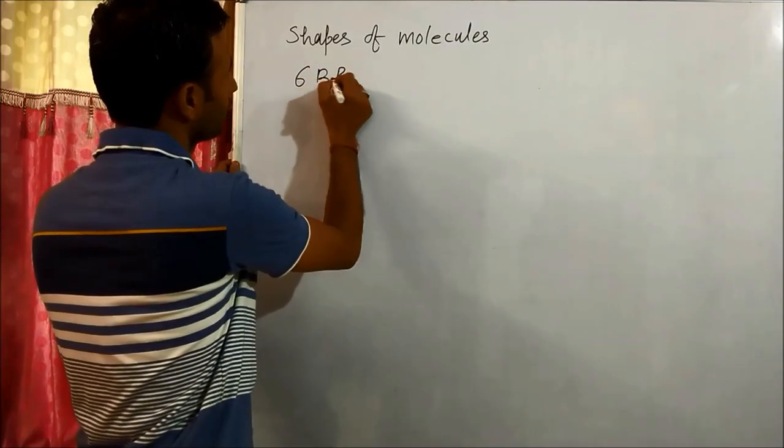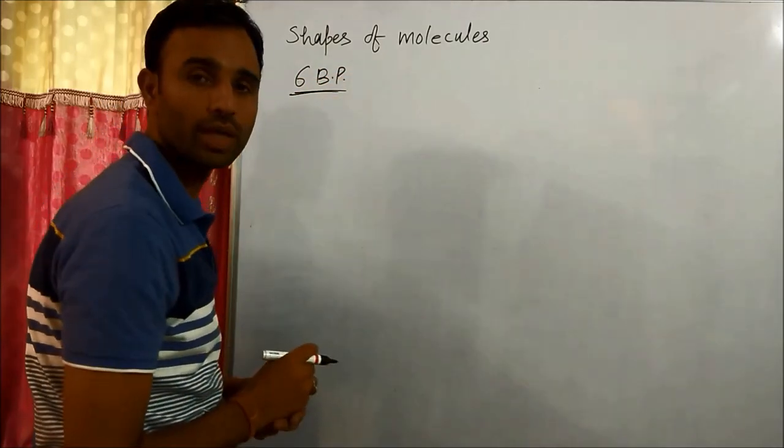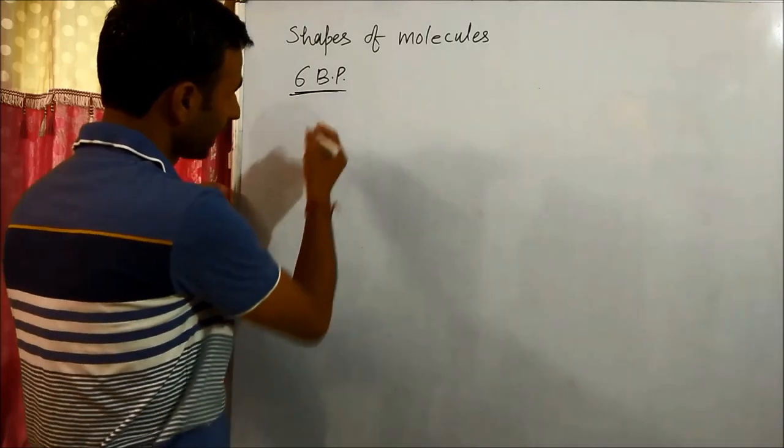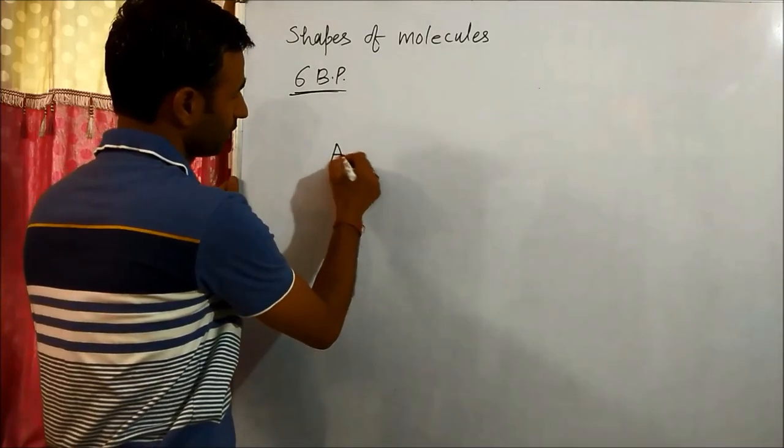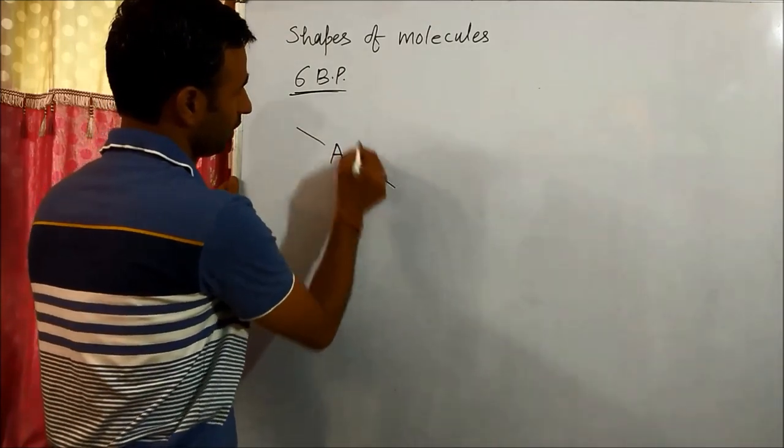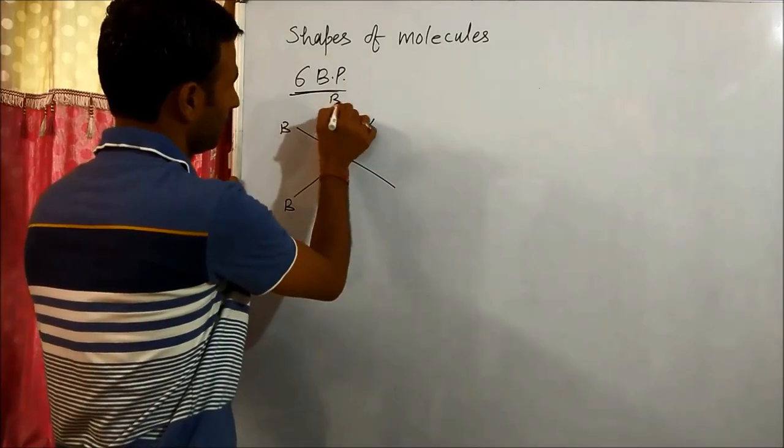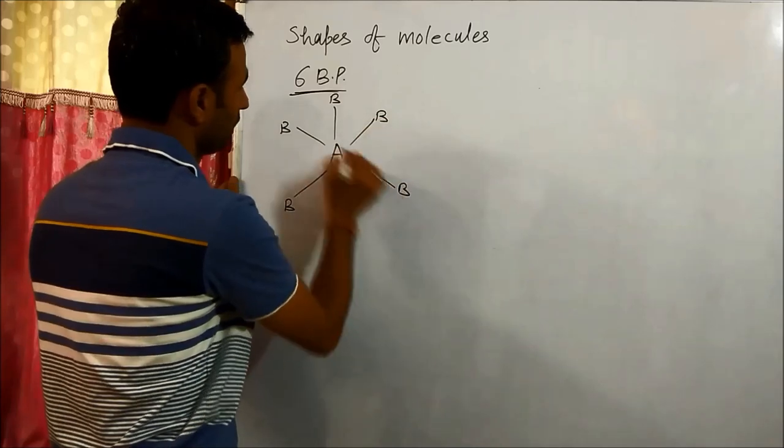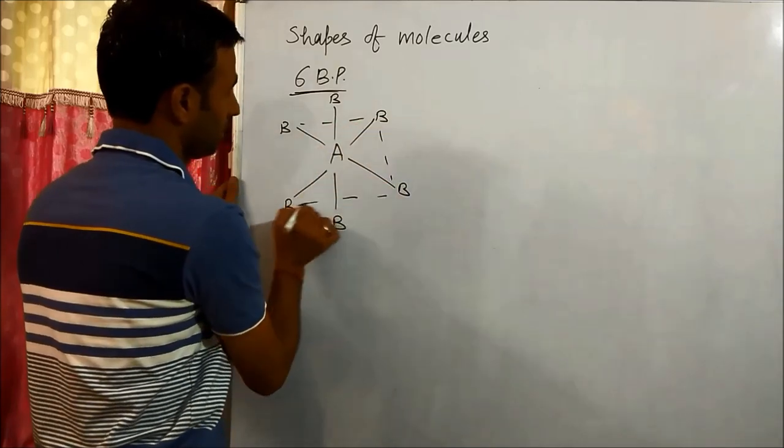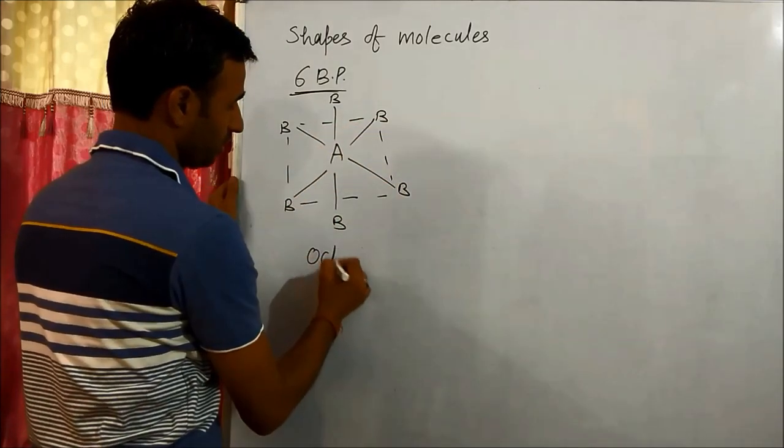If we have six bond pairs, then the geometry is octahedral.